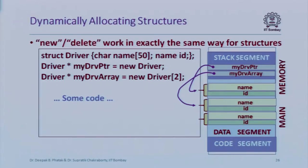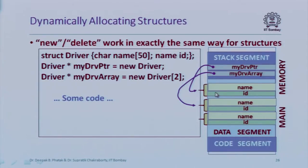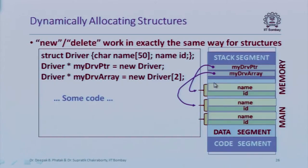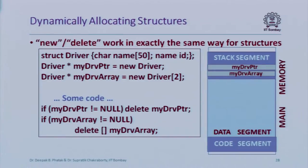We can use new and delete with structures just as with basic data types. For example, 'new driver' allocates an object of type driver on the heap and returns a pointer to it. Similarly, 'new driver[2]' allocates an array of two driver objects. This is just like 'new int[2]' but for a user-defined type. 'delete my_drv_pointer' frees the pointed-to object, and 'delete[]' frees the entire array.